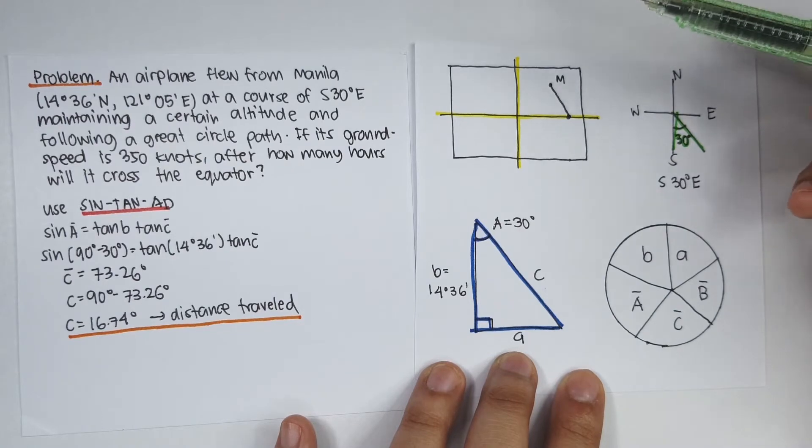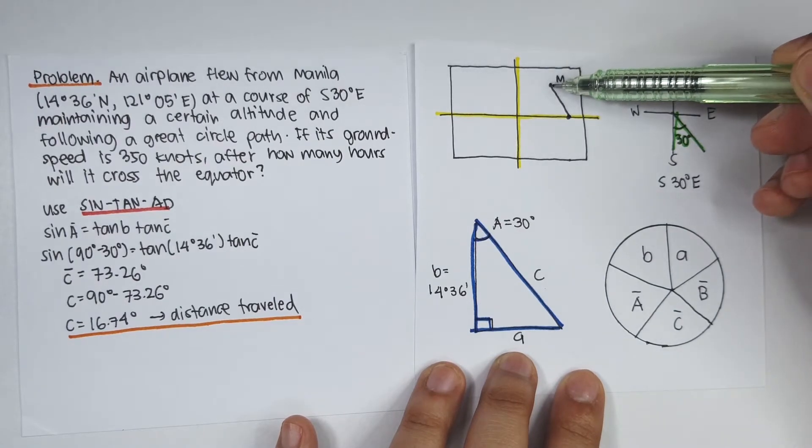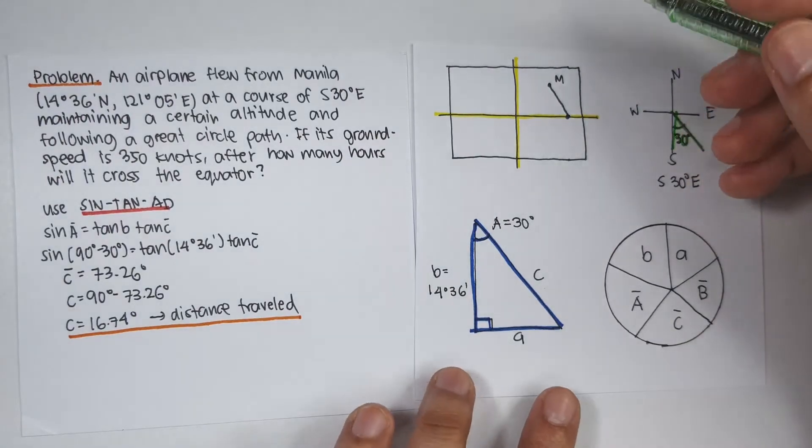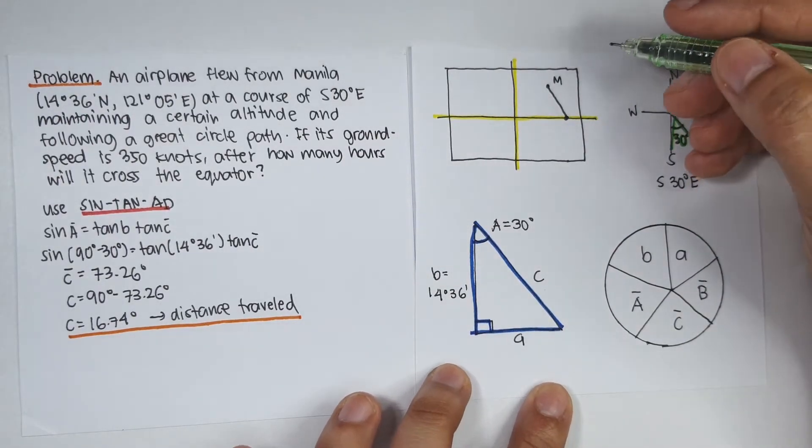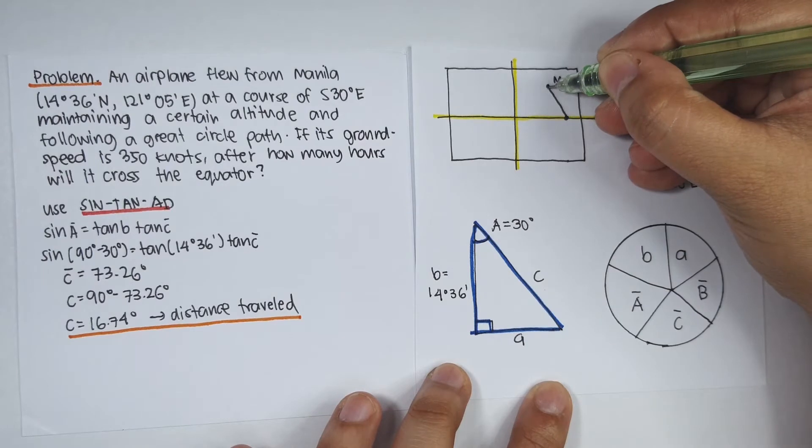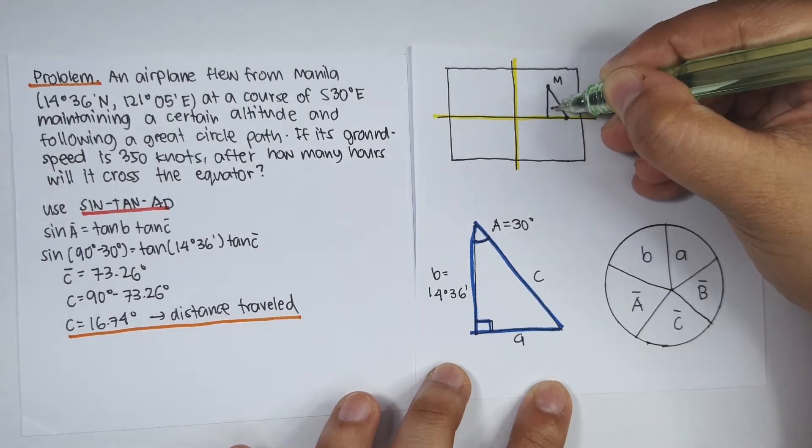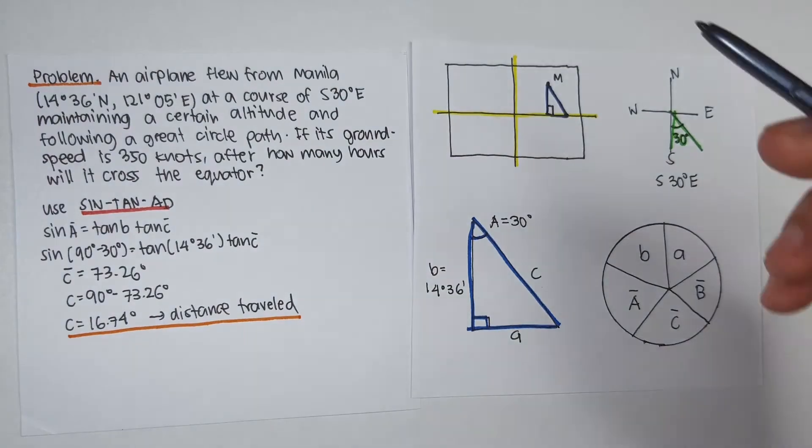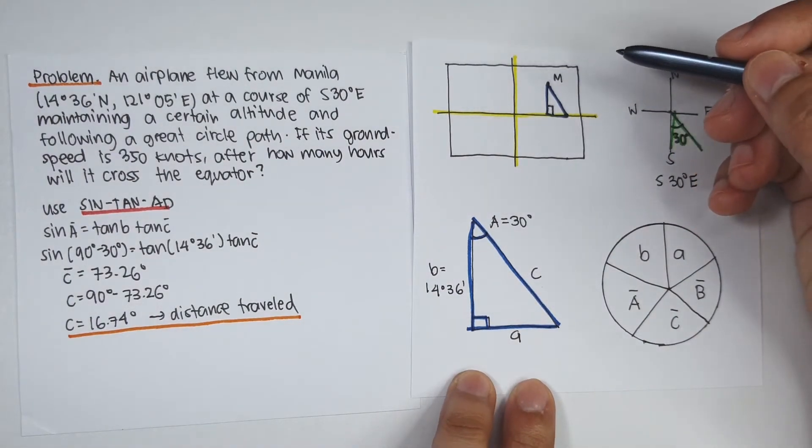Question: how much time did it take for the plane to travel from Manila to this point here? So first is you need to get the distance it traveled. So if I were to draw a line from Manila downward to the equator, notice that this here is 90 degrees, so we have formed a right spherical triangle.